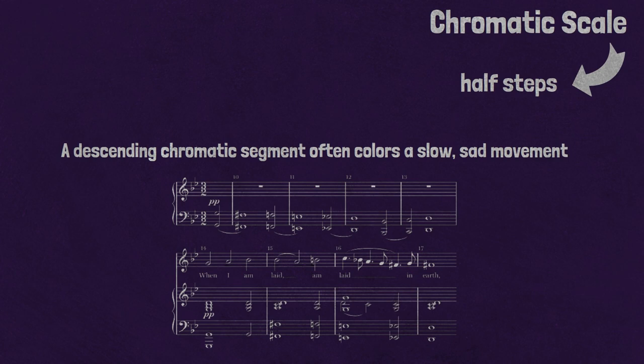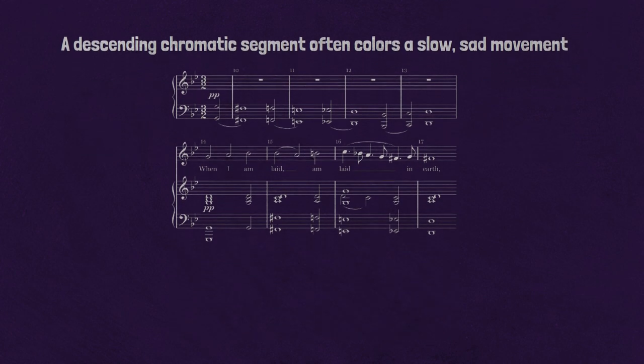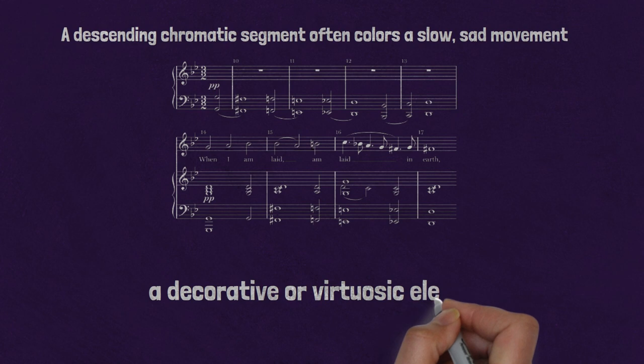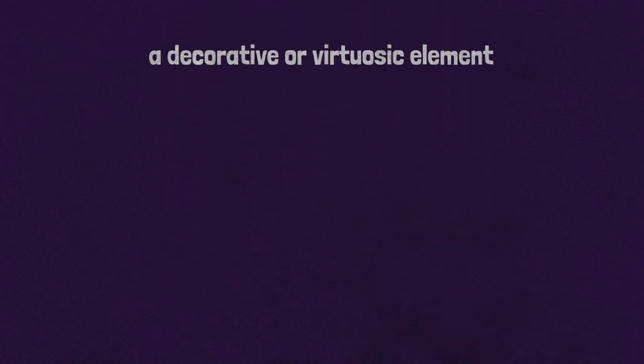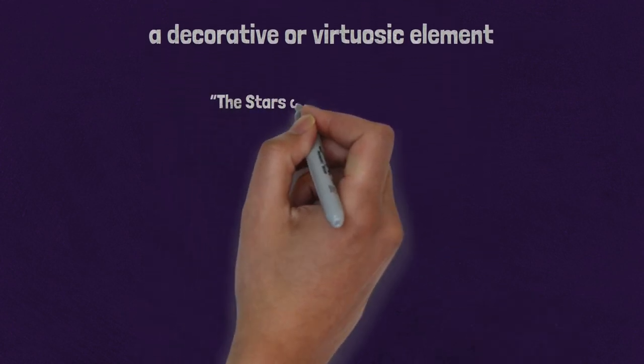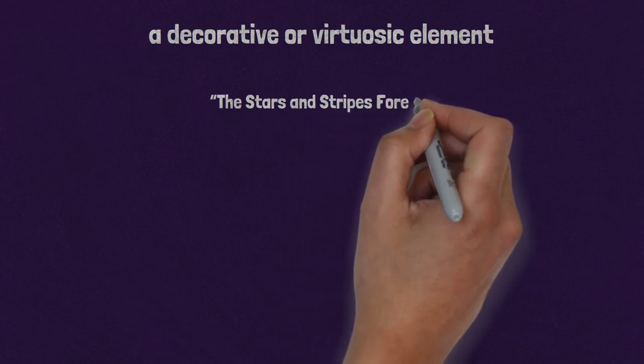Chromatic passages may also appear in showy music as a decorative or virtuosic element. For an example, listen to the trio section of The Stars and Stripes Forever.